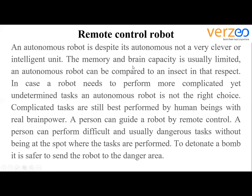Now we have remote control robots. An autonomous robot, despite being autonomous, is not a very clever or intelligent unit — its memory and brain capacity are usually limited. An autonomous robot can be compared to an insect in that respect. In cases where a robot needs to perform more complicated or undetermined tasks, an autonomous robot is not the right choice. Complicated tasks are still best performed by human beings with real brainpower.